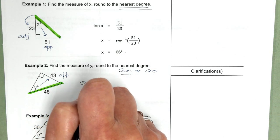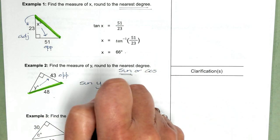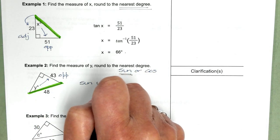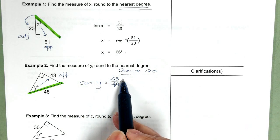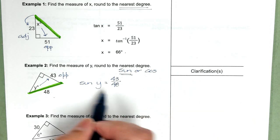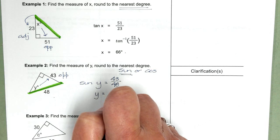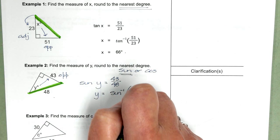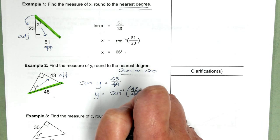And sine of y equals the opposite over the hypotenuse. Notice that my denominator value, 48, is greater than my numerator, 43. So I have that in the right order.